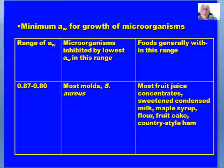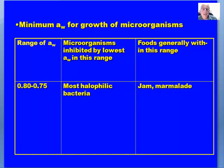Getting down to 0.87 to 0.80, as we get into very low levels we see that most food spoilage microorganisms — particularly bacteria — typically won't grow, except maybe some salt-loving bacteria. Foods generally within this range are jam and marmalade. Those who have made their own jam and marmalade know that typically the only way jam and marmalade would actually spoil is through the growth of mold on the surface. This occurs when the jar is opened and oxygen is able to get to the surface of the jam or marmalade.